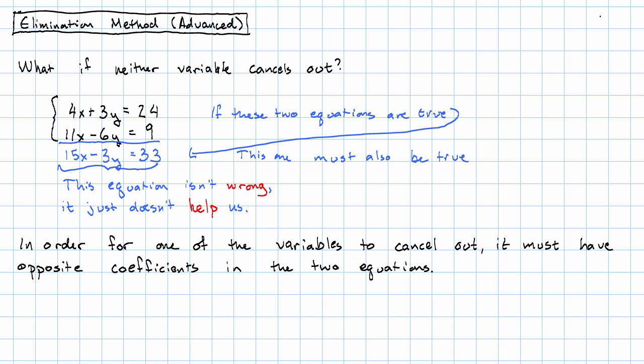In order for one of the variables to cancel out, it must have opposite coefficients in the two equations. In the last video, for instance, y had coefficients 7 and negative 7. Here the coefficients of x are 4 and 11. Those are definitely not opposites. The coefficients of y are 3 and negative 6, also not opposites.